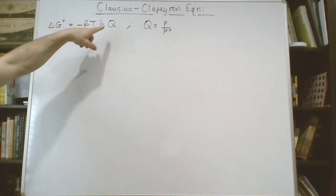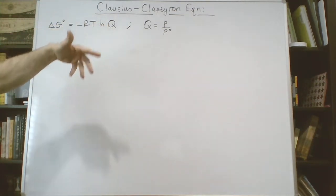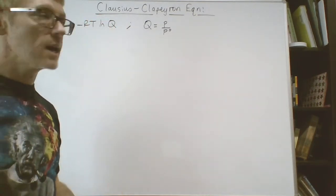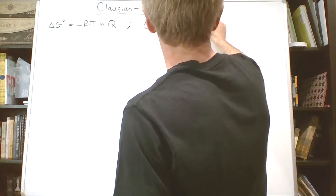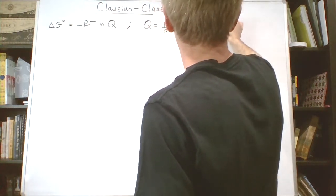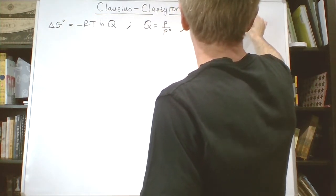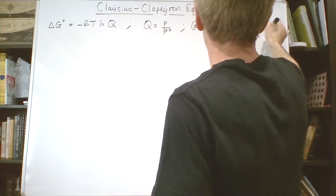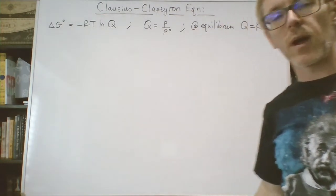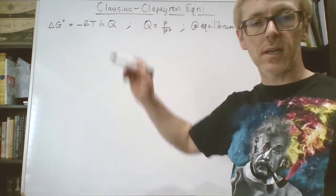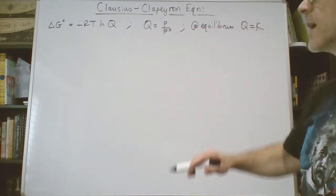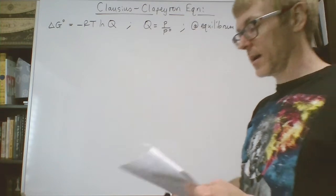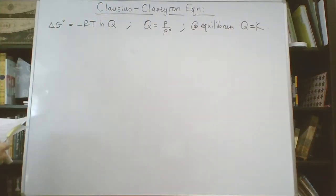In the previous video I called this K; it doesn't really matter because at equilibrium Q is numerically equal to K. So don't be surprised or worried that I've written Q here and I wrote K in another video. It really doesn't matter as long as you know we have equilibrium.